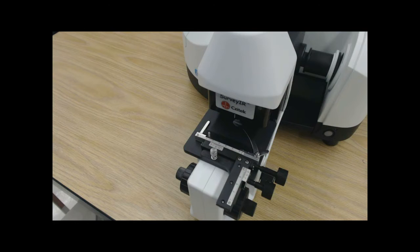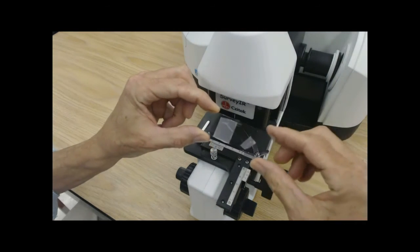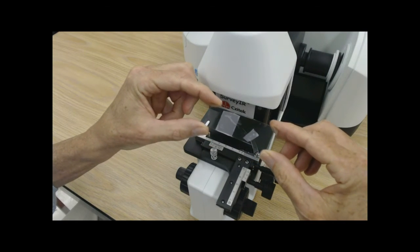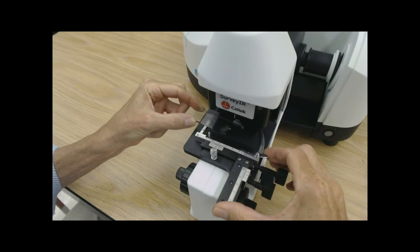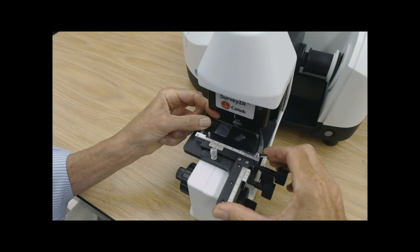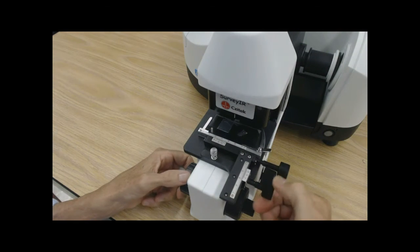Greg will now demonstrate the installation of 1 by 3 inch microscope slide substrates into the 1 by 3 inch stage clip. In this case, we're demonstrating a low e-glass substrate.